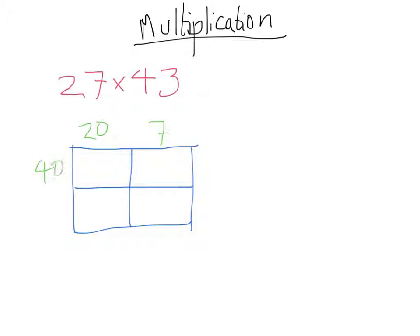In each of these boxes, we're going to multiply two numbers together. This one will be these two numbers, this one here will be these two, and finally this one will be these two multiplied together. So we're going to multiply each part together.